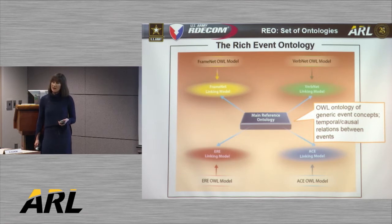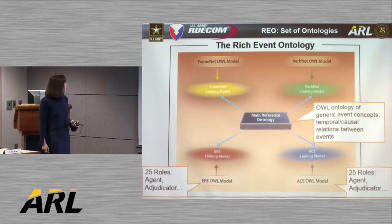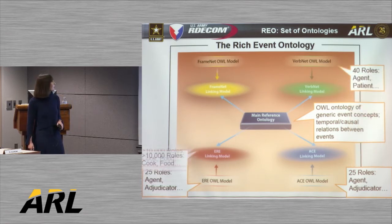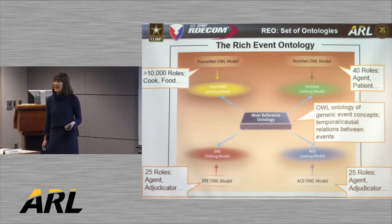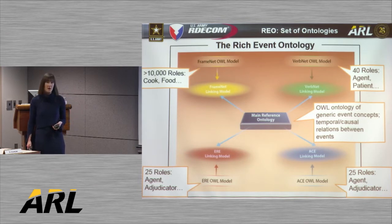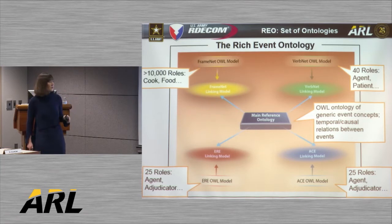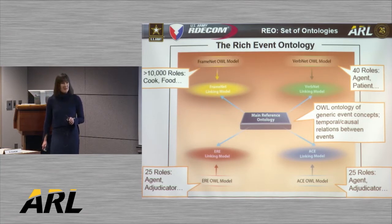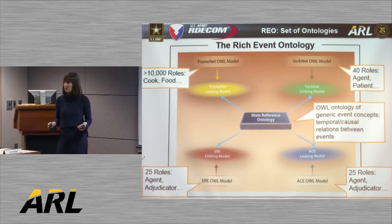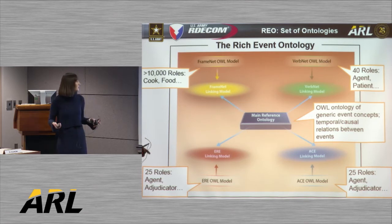We selected these resources because each tells us about related events and event participants, but each does so with a different granularity or level and type of semantic information included. ACE and its spin-off share the same 25 semantic role labels, VerbNet uses 40 role labels, while FrameNet uses over 10,000 fine-grained role labels like cook and food. So we have approaches where one assumes only 25 roles are needed to label all event participants, and another assumes over 10,000 are needed. The ontology allows us to combine and compare this information and combine annotations from each resource into a larger, more diverse training corpus.